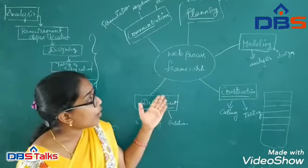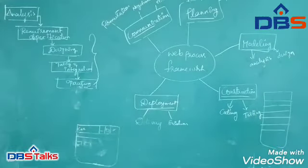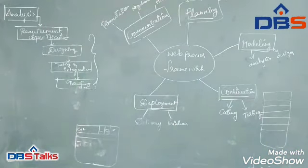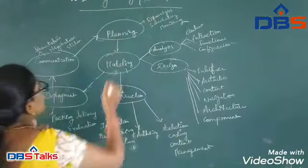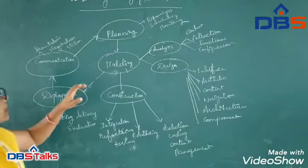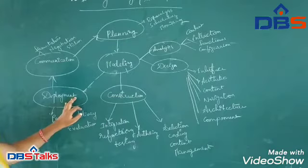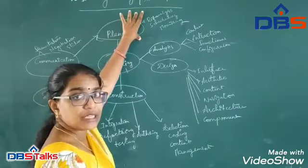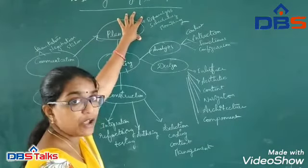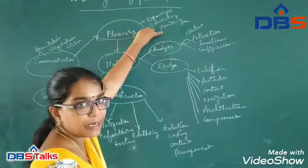Now let us see how the web engineering process model works. In these phases — communication, planning, modeling, construction, and deployment — what are the tasks we perform? In the planning phase, we identify the tasks, perform fiscal analysis and scheduling, to proceed for that particular software.